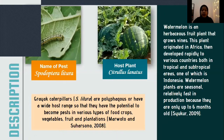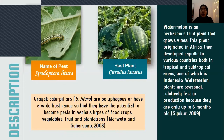The description: the name of the pest is Spodoptera littoralis and the host plant is Citrullus lanatus. Spodoptera littoralis armyworm caterpillars have a wide host range, giving them the potential to become pests in various types of food crops, vegetables, fruit, and plantation crops. Watermelon is an herbaceous fruit plant originating from Africa that developed rapidly across tropical and subtropical countries including Indonesia. Watermelon plants are seasonal and relatively fast in production, maturing in only up to six months.